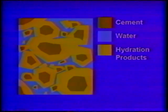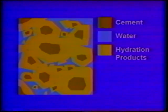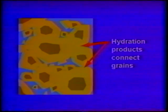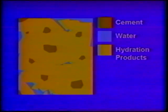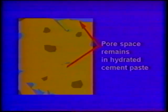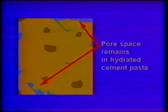When the coatings first begin to impinge, setting occurs. There is a steady development of strength as the coatings grow together. The amount of strength attained by the mixture of cement and water depends on how effectively the space between the grains is filled up. Concrete will harden within a few hours, but hydration continues for weeks, even years, after placement.